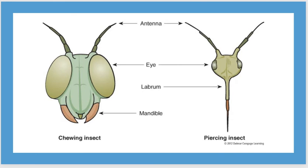Looking at some insect anatomy: most insects have some type of antenna, and we look at the configuration of those antennae to help identify them. We have their eyes. If we're looking at a piercing insect — that's the picture on the right — there's a pointer called the labrium that actually pokes through the plant and retrieves nutrients. A chewing insect like a grasshopper has a mandible up front — basically two chewing fingers that grab the plant and break it up before consuming it.